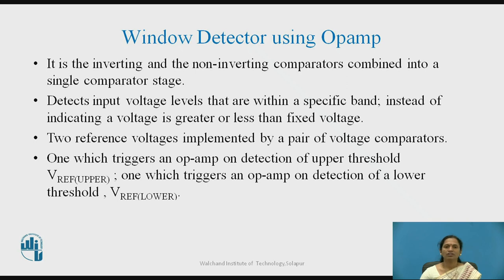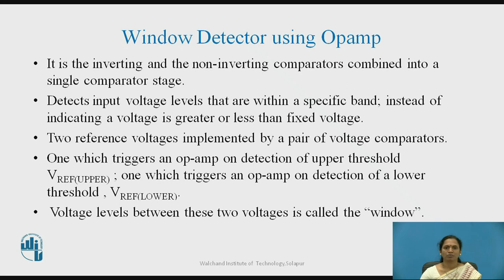One reference triggers the OPAMP on detection of the upper threshold and one will trigger the OPAMP after detection of the lower threshold — that is V reference upper and V reference lower. The voltages between these two levels is called the window.